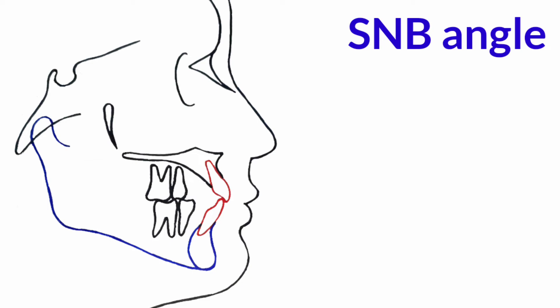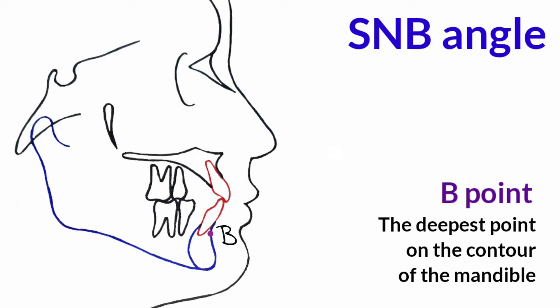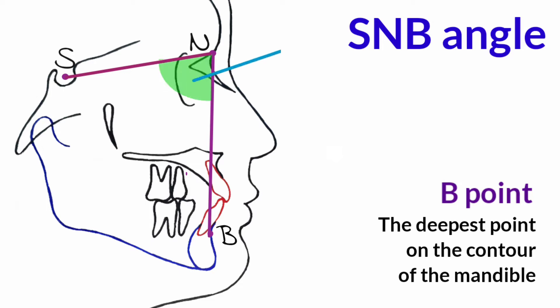The SNB angle uses point B instead of point A, where point B is the deepest point on the contour of the mandible. This angle is formed by connecting point S, point N, and point B, and the SNB angle is the angle of intersection between those lines.